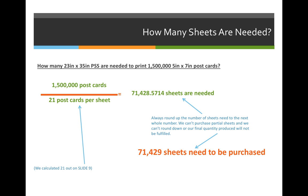So let's take this example. We have our twenty-three by thirty-five inch press sheets and we're printing those five by seven inch postcards. We want to print one point five million of them, so our quantity of postcards is one point five million. We'll divide that by twenty-one out, because we calculated the value of the number out in the last video.